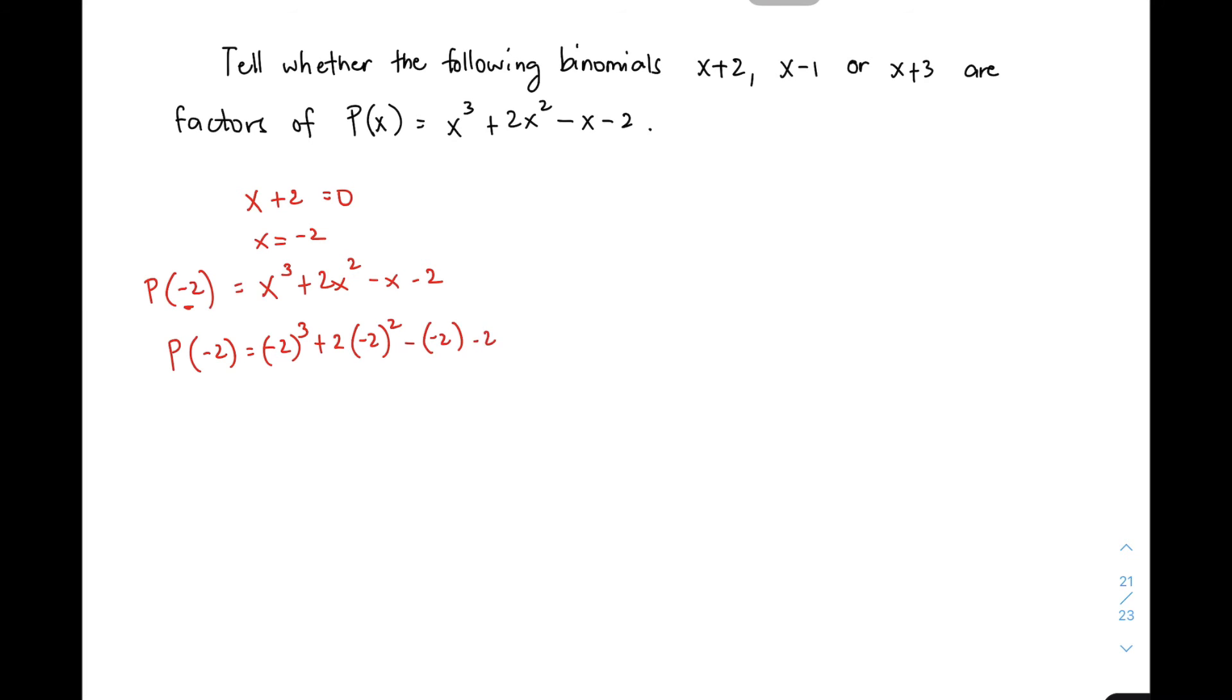So you have p of negative 2 is equal to negative 2 raised to 3 plus 2 times negative 2 squared minus negative 2 minus 2. Simplify natin ito since negative yung nasa loob at odd number that is negative 8 plus 2 times 4. Kasi negative 2 raised to 2 is 4. Then negative times negative, that is plus 2 or positive and then minus 2.